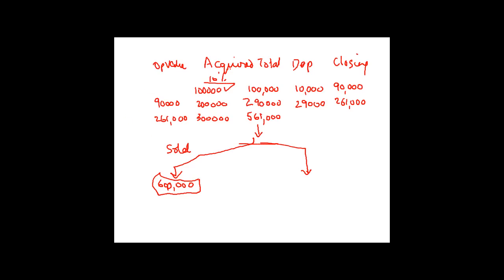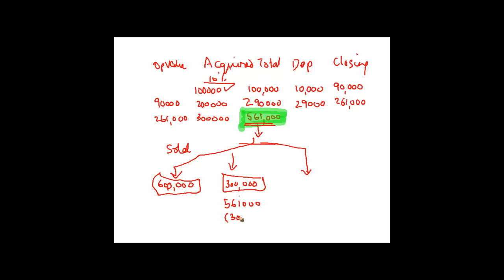I had a written down value of 5,61,000. As long as my sale consideration is less than 5,61,000 — say 3 lakh — I take the 5,61,000 and reduce 3 lakh from it; the balance is 2,61,000. This becomes my new written down value on which I will claim depreciation going forward. There will be no capital gain.